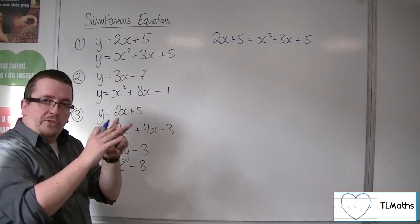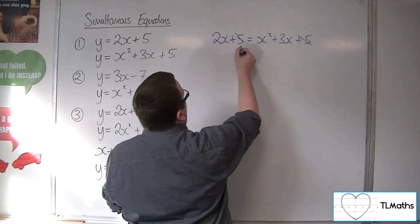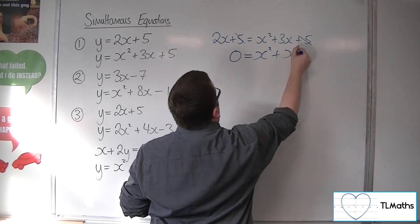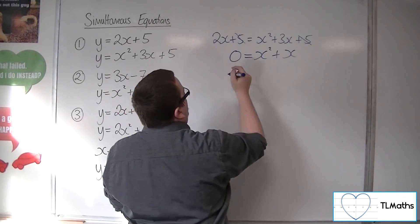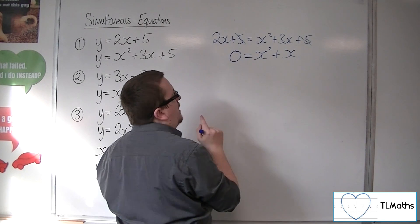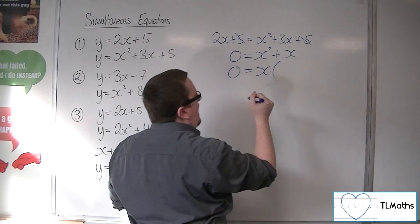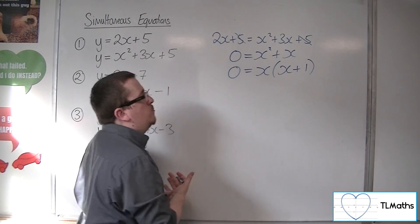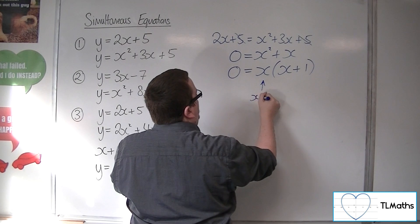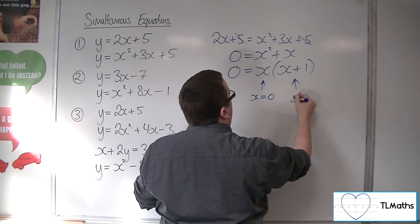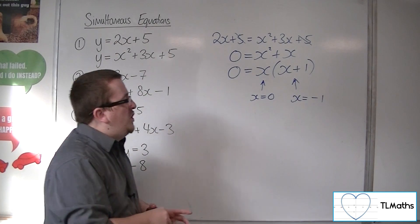What's convenient here is that I can subtract 5 from both sides, so they both disappear. You can subtract the 2x from both sides as well, and you're just left with 0 equals x squared plus x. To solve this equation, you have to factorise the right-hand side — it is a quadratic after all. So we can factor out the x and have x plus 1 inside the bracket. So either x equals 0 or x equals minus 1 — so there are two x values.